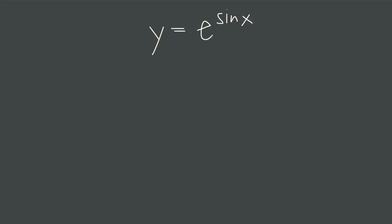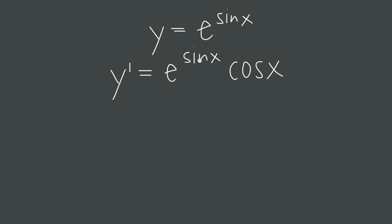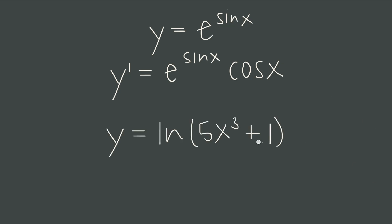What if we have an exponential function combined with a trigonometric function? The outside function is the exponential and the inside function is sine of x. The derivative of any exponential is just the exponential itself, so the derivative of e to the anything is exactly the same thing. We take the derivative of the outside and get e to the sine of x, leaving the inside completely untouched. Then we multiply by the derivative of the inside function. The derivative of sine of x is cosine of x, so we multiply by cosine x. No matter what kind of function we pick, we continue following this inside-outside pattern.